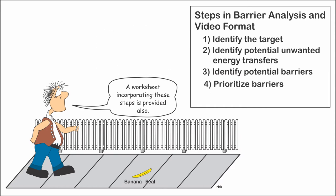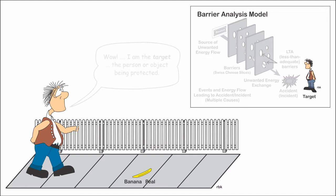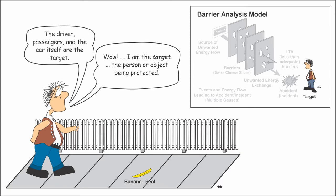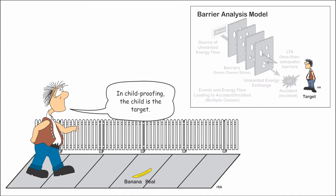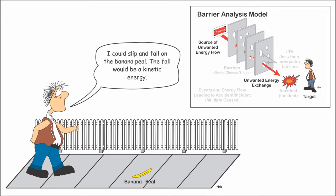A worksheet incorporating this process is also provided. The first step is to determine the target — the person or object that is to be protected. It could be the pedestrian on the sidewalk. Using an automobile example, the driver, passengers, and car itself could be the target. Or, in the home with a small child, the home may need to be childproofed. Second, there is a source of an unwanted energy flow that has the potential to transfer to the target and result in injury, damage, or loss.